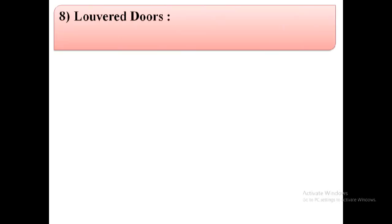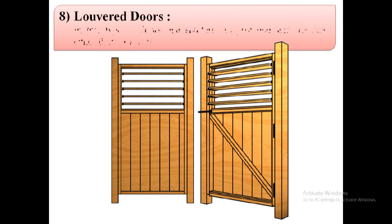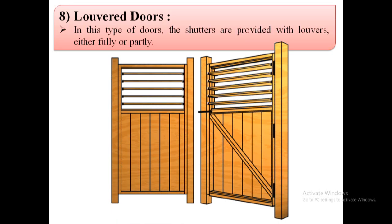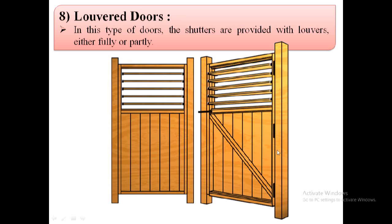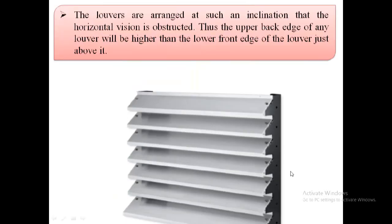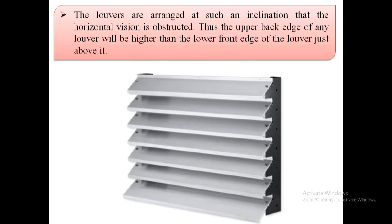The last type of door in this video is louvered doors. In this type of door the shutters are provided with louvers either fully or partly. The louvers are arranged at such an inclination that horizontal vision is obstructed, so the upper back edge of any louver will be higher than the lower front edge of the louver just above it.